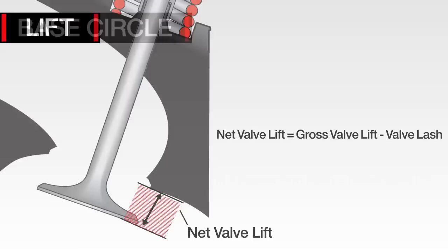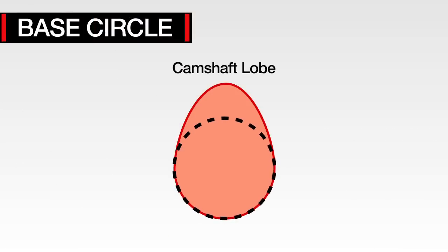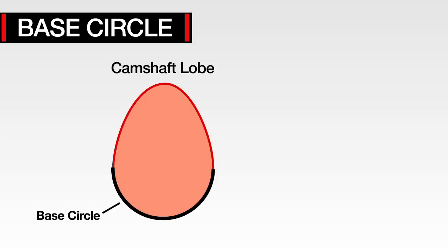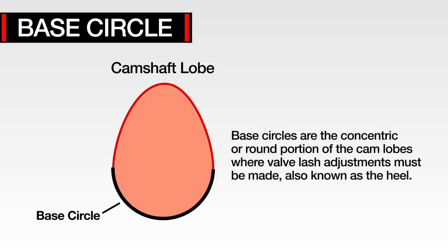When discussing valve train terms, it is important to understand where the base circles of a camshaft are located. Base circles are the concentric, or round, portion of the cam lobe where the valve lash adjustments must be made, also known as the heel.